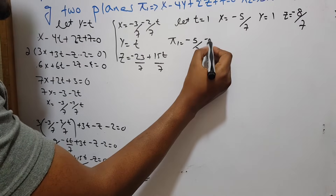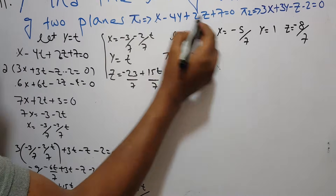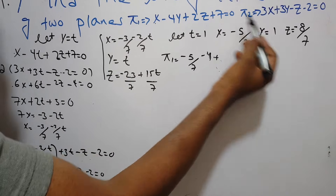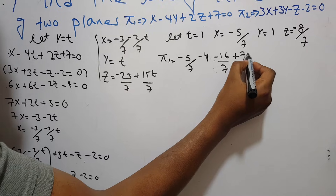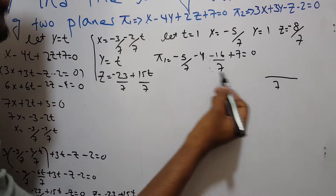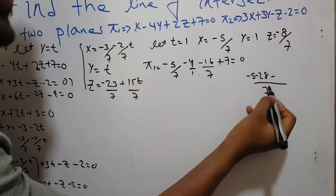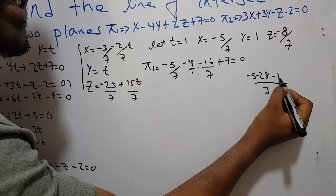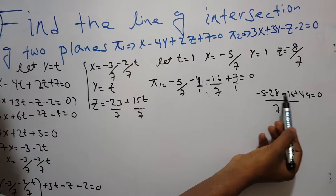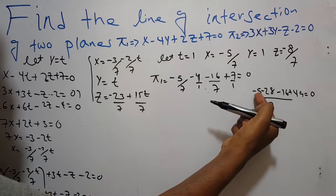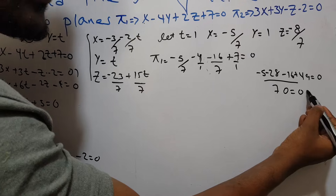Checking the point in the first plane equation: y minus 4 times 1, which is negative 4, plus 2 times z which is negative 8 over 7, giving negative 16 over 7, plus 7 equals 0. Evaluating: 1 times negative 5 equals negative 5, 7 times negative 4 equals negative 28, 1 times negative 16 equals negative 16 (over 7), plus 7 times 7 equals 49. So negative 28 minus 16 equals negative 44, minus 5 equals negative 49, plus 49 equals 0. Zero equals zero. Verified.